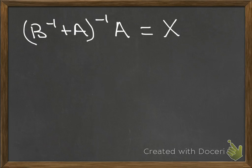I can finish now by saying that (B^(-1) + A)^(-1) times A must be equal to X, because I've shown that this matrix actually is invertible.